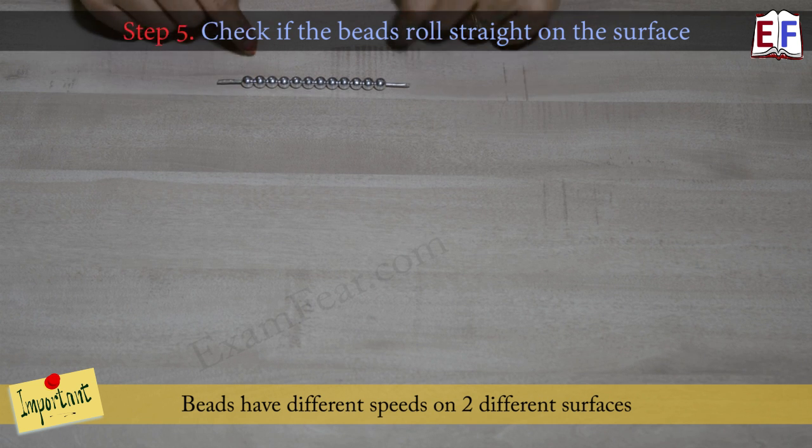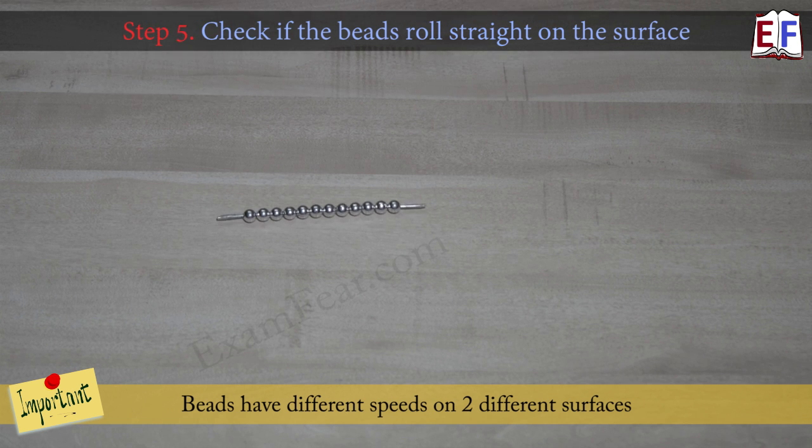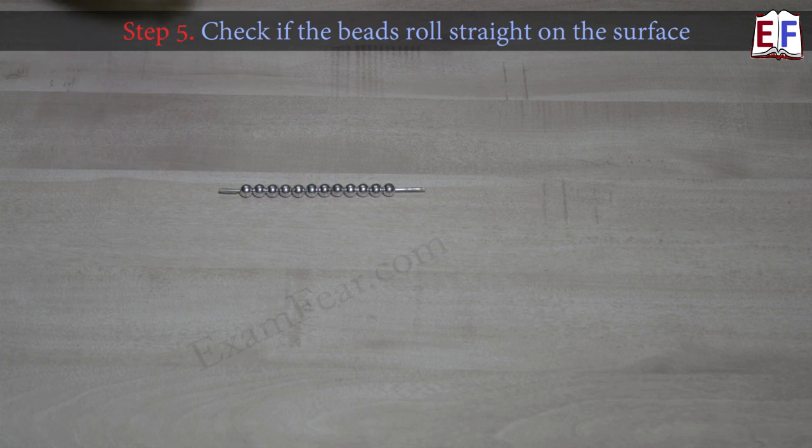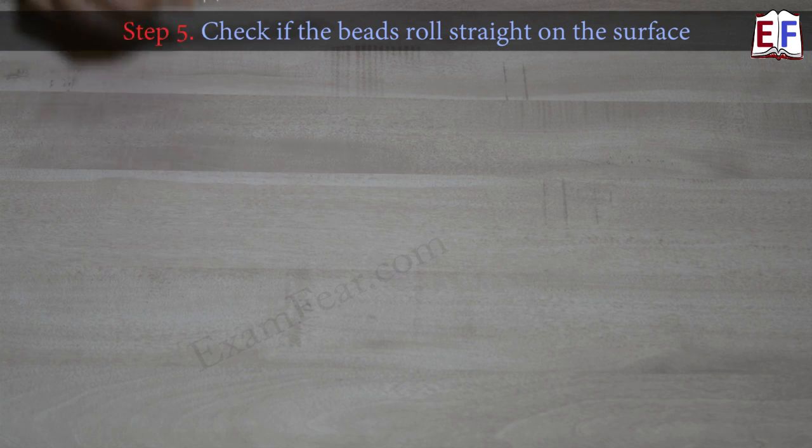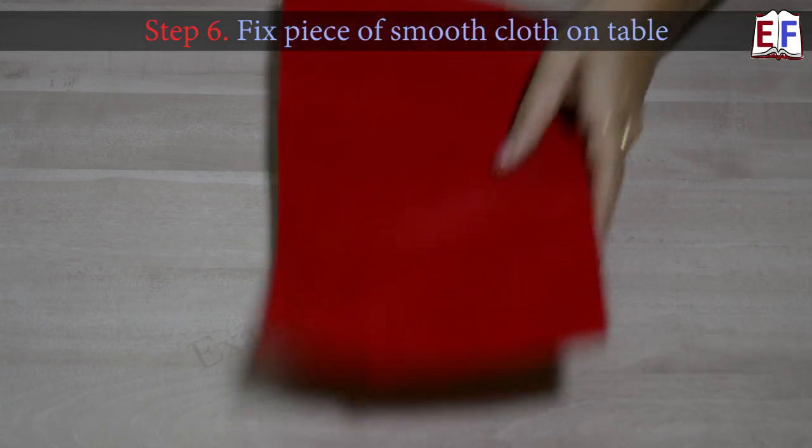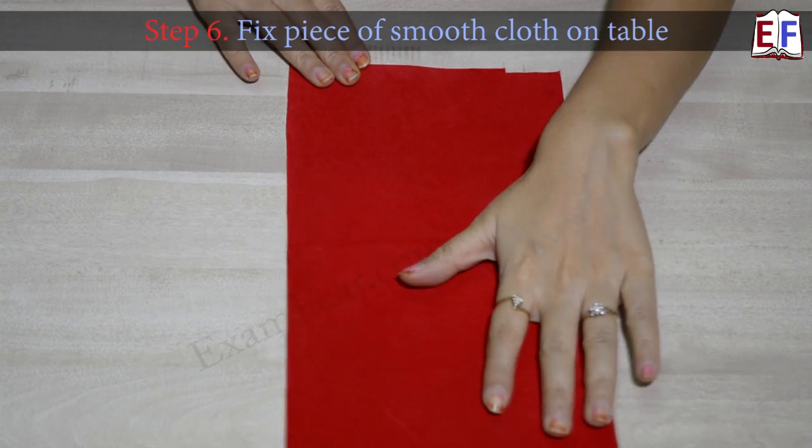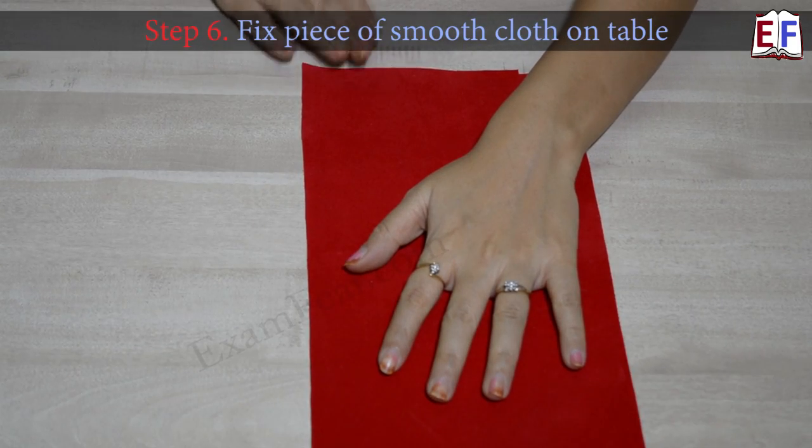Now what happens when the same thing moves on two different surfaces? When we talk about refraction, we talk about two different medium with two different refractive index. Therefore, their speed changes. So now let's create two different surfaces. For that, we will make use of this piece of cloth. We will fix it on this table.